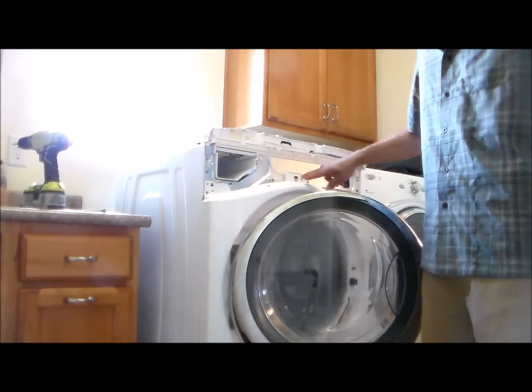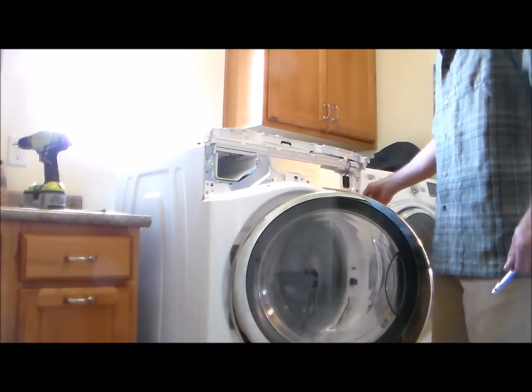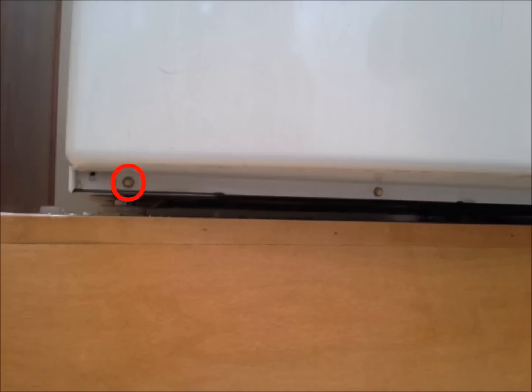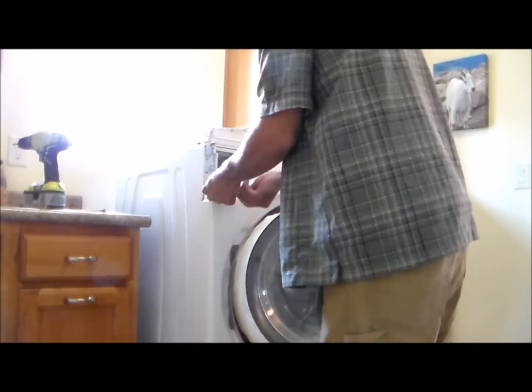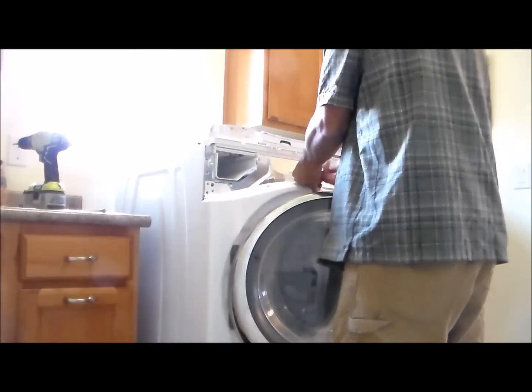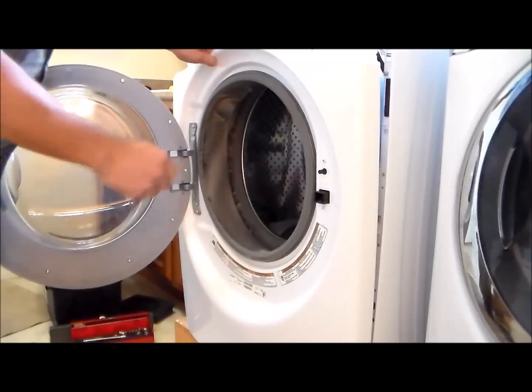Now we're going to continue to take off the front of the washing machine. We're going to take out three screws on the top here, and three screws on the bottom. There's one of the screws highlighted for you. So we're going to get those screws off, and then we're going to have more stuff to take apart.